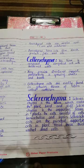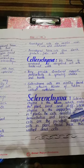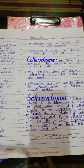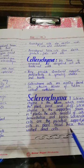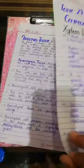Sclerenchyma is the tissue which makes the plant hard and stiff. Sclerenchyma is a supporting tissue in plants. The cells consist of cellulose, hemicellulose, and lignin. Sclerenchyma cells are the principal supporting cells in plant tissue and are called dead cells.